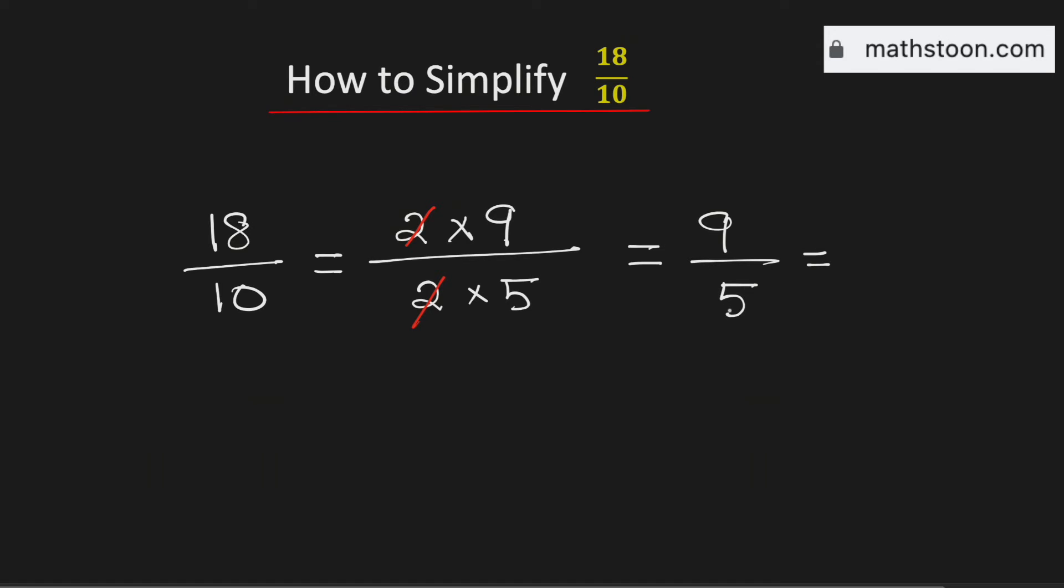We know that 5 goes into 9 by 1 time with 4 left over, divided by 5. So 18 over 10 simplified as a mixed number is equal to 1 and 4 fifths, and this is our final answer.